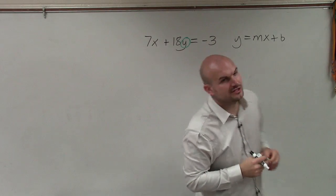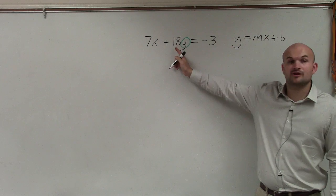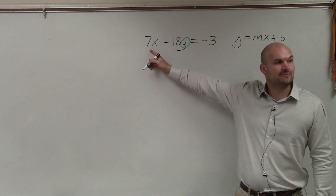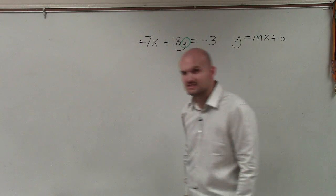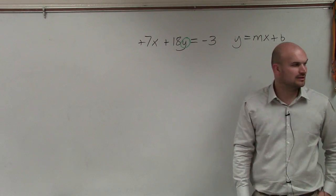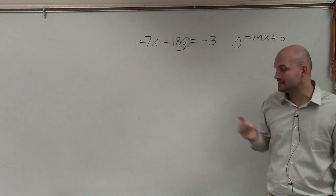So to do that, what we need to do is identify what is happening to my variable y. And you can see my variable is being multiplied by 18 and is being added by 7x. The reason why it's being added is because that is a positive 7x. A lot of people confuse that. It is a positive 7x, so we're adding the 7x to the 18y.